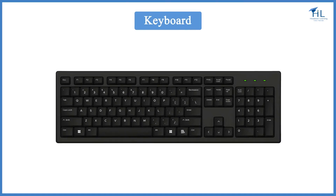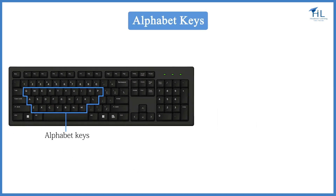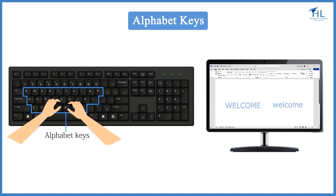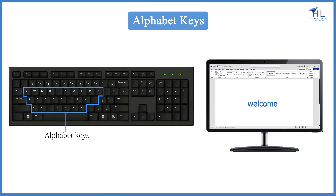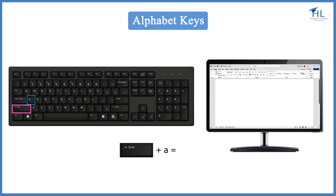There are mainly two types of keys on the keyboard: alphabet keys and number keys. The alphabet keys are used to type capital and small English alphabet letters. There are 26 alphabet keys from A to Z. When you type using alphabet keys, it writes small English letters. To write capital English letters, you can either press the Shift key along with the letter key or use Caps Lock. For example, Shift plus small A gives capital A.